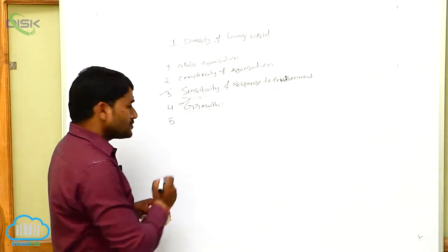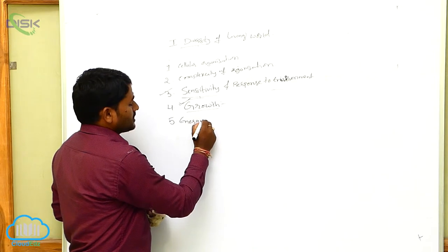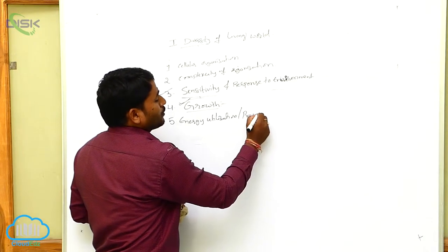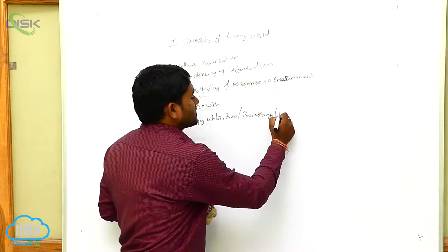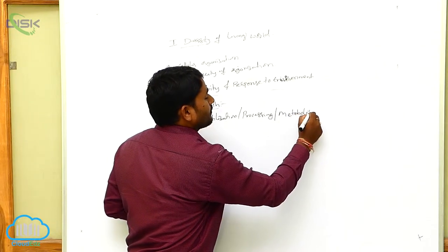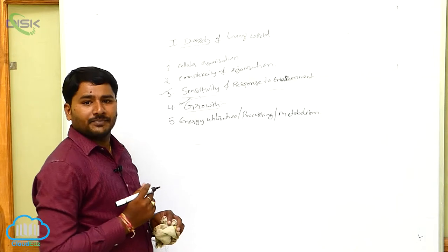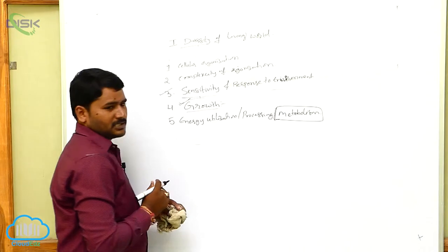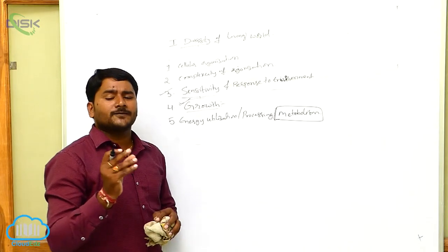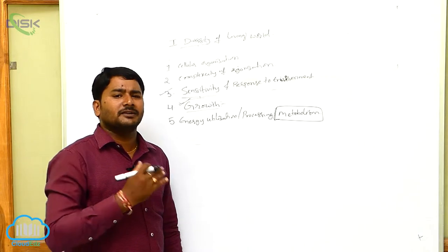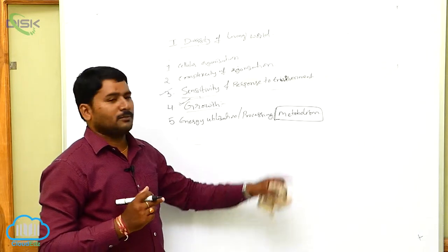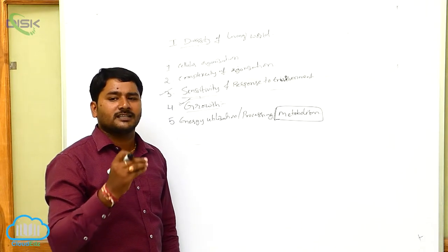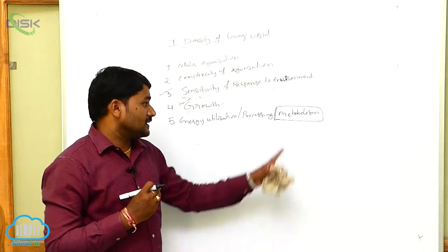Now the fifth character is energy utilization and energy processing — that is, metabolism. What is metabolism? The sum total of chemical reactions occurring in an individual's body constitutes metabolism. Metabolism means the total chemical reactions going on inside the individual's body.